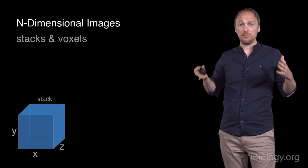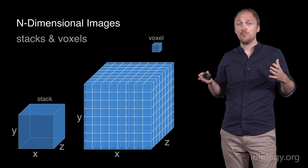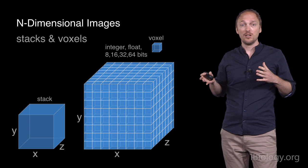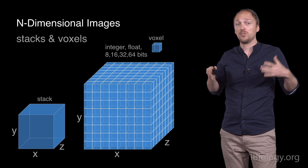A three-dimensional image is often called a stack. Images with more dimensions are also often called stacks. A stack is made of voxels, in the same way that a two-dimensional image is made of pixels. Each voxel is assigned a fractional or integer value. These values can be represented with different levels of precision, such as 8, 16, 32, or 64 bits.